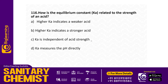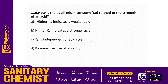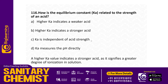How is the equilibrium constant Ka related to the strength of an acid? Options: higher Ka indicates a weaker acid; higher Ka indicates a stronger acid; Ka is independent of acid strength; Ka measures the pH directly. Answer: Higher Ka indicates a stronger acid, signifying a greater degree of ionization in solution.